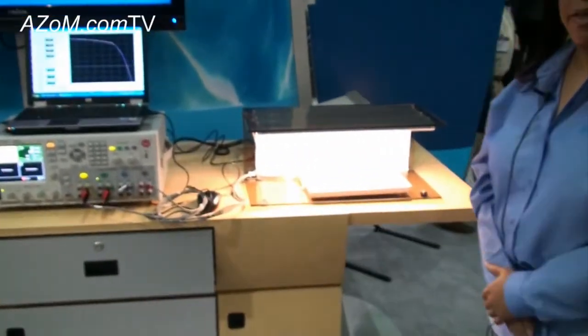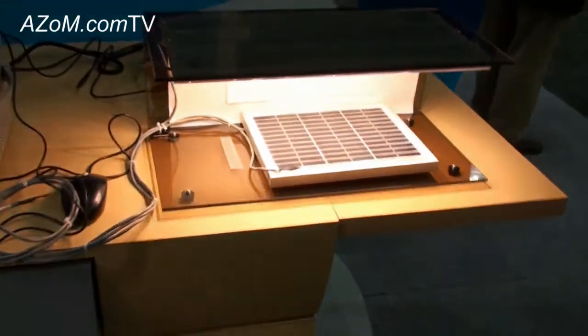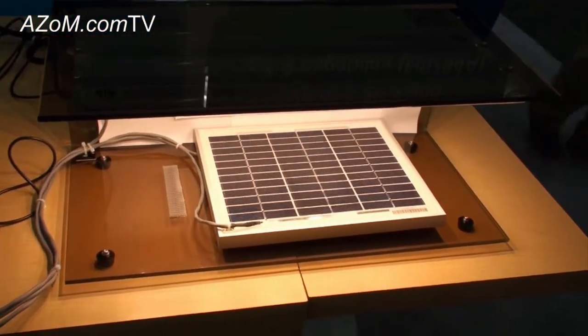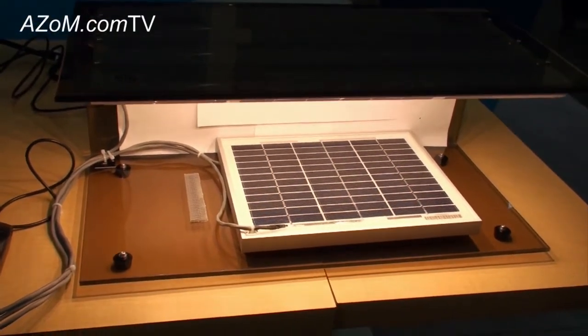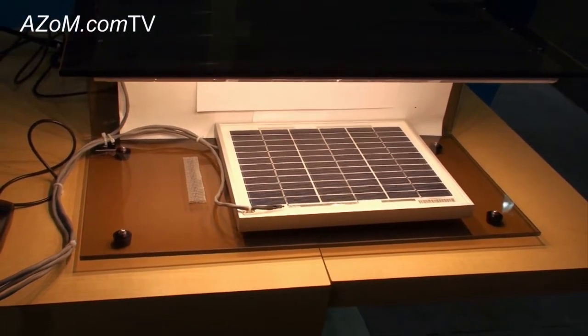Our source measurement unit is particularly important for items like silicon or polymer based devices like the solar cell panel that we have here. Essentially what you want to do from an electrical standpoint is make sure that a solar cell operates properly from a cell level as well as when it's integrated into a panel.